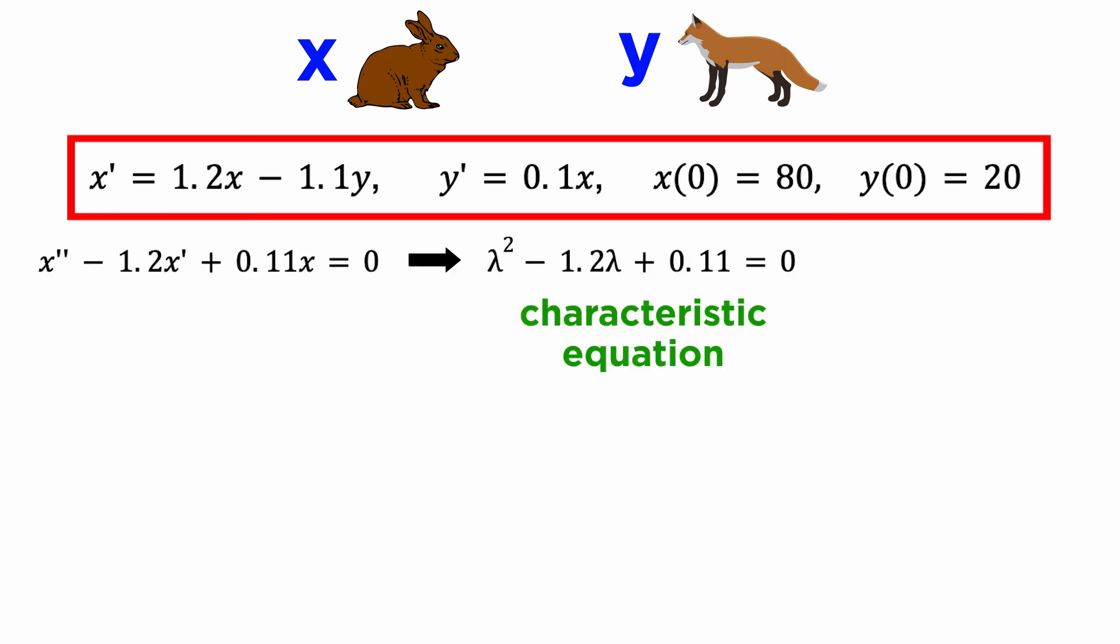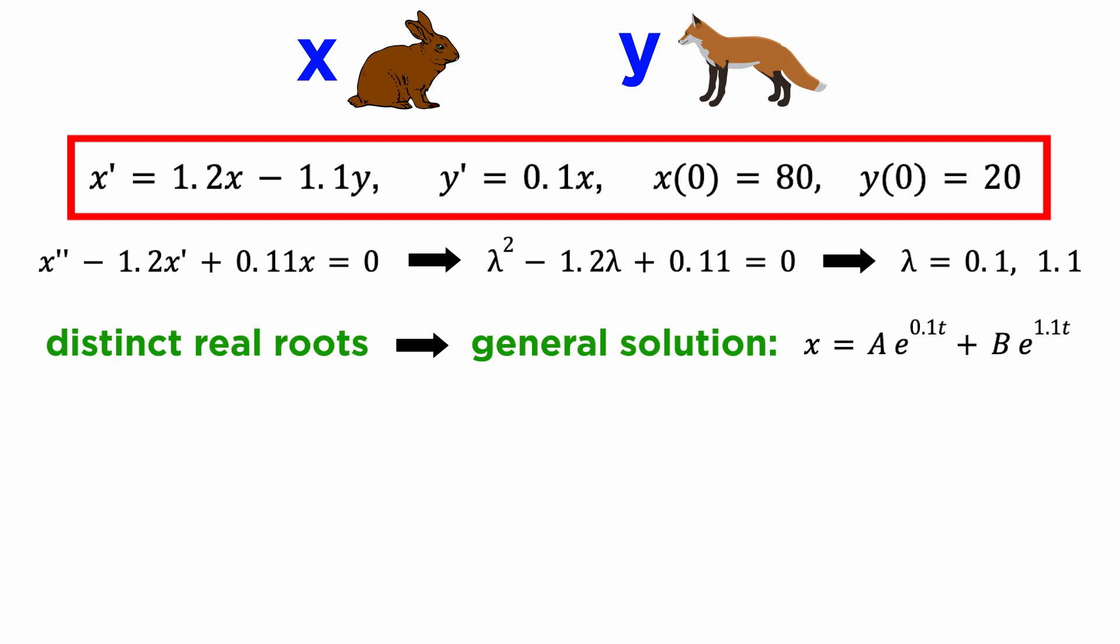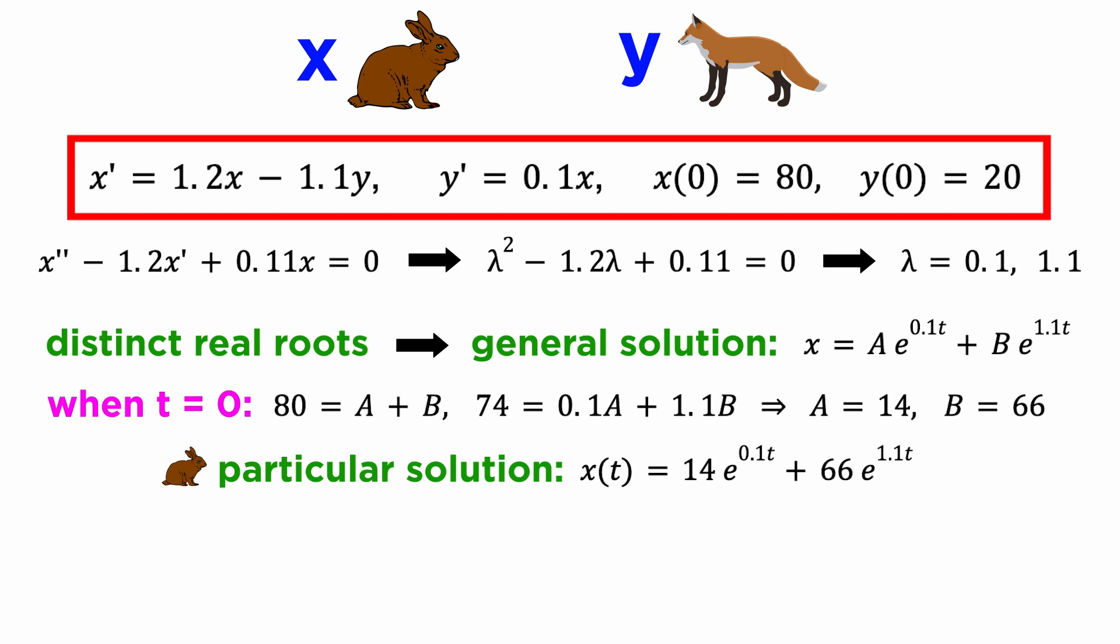We can now solve this using the characteristic equation, for which we find distinct real roots, and so the general solution will be a sum of exponential functions. Using the initial conditions we can find the particular solution for the rabbit population, x of t.